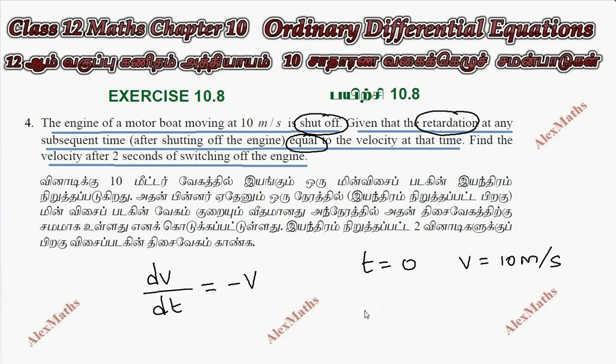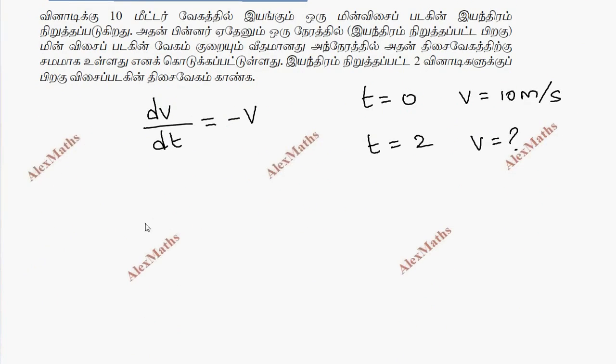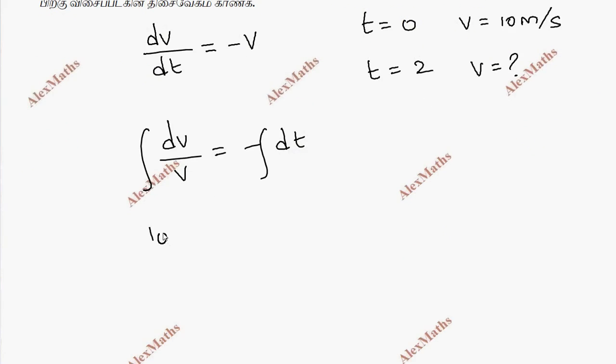After 2 seconds, we need to find the velocity. So separating the variables: dv by v equals minus dt. Then integrate both sides. We have integration.